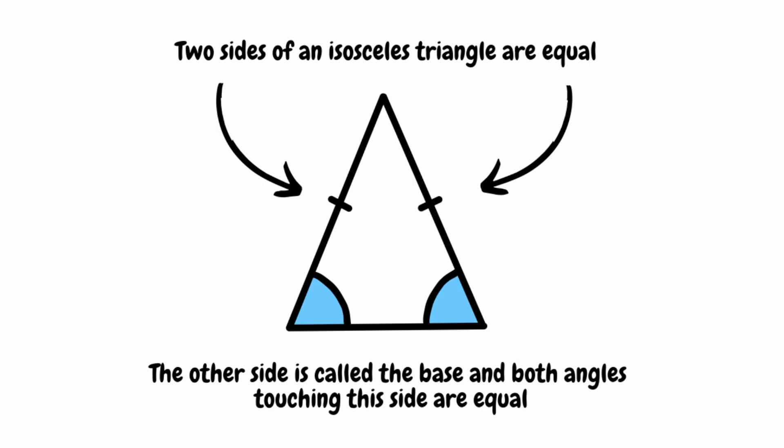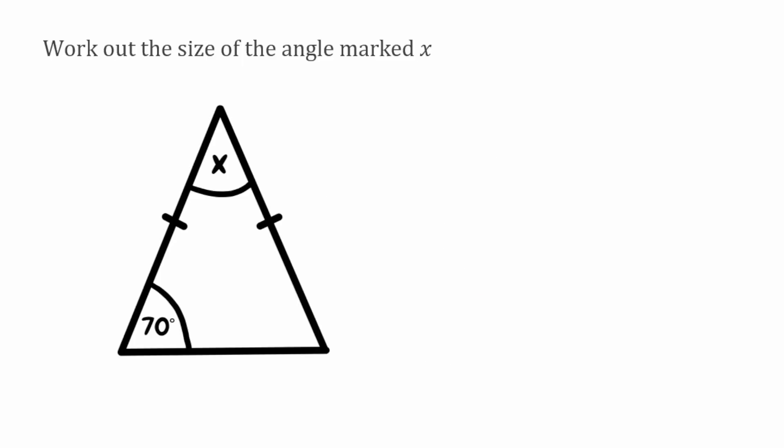Now that we know what to look for in an isosceles triangle, let's look at some practice questions. For this first question we want to figure out the size of the angle marked x. Looking at this triangle, we can see this side here has a mark and so does this side here. So these two sides are the same, which means that the side at the bottom must be our base. We know base angles of an isosceles triangle are equal, so if that angle on the left is 70 degrees, this other angle touching the base must also be 70 degrees.